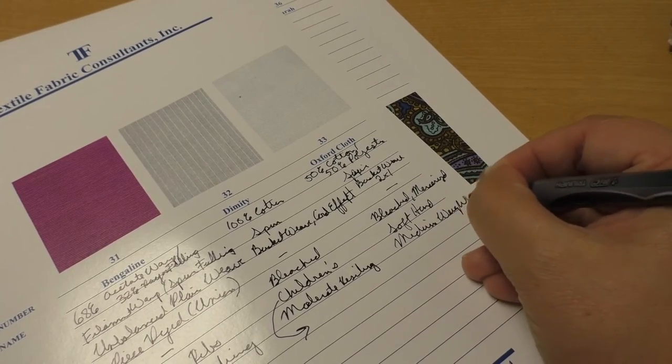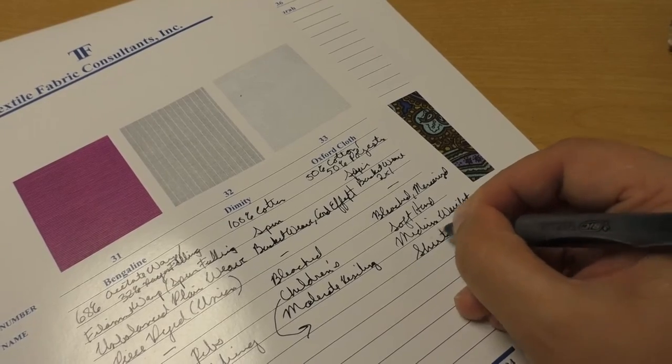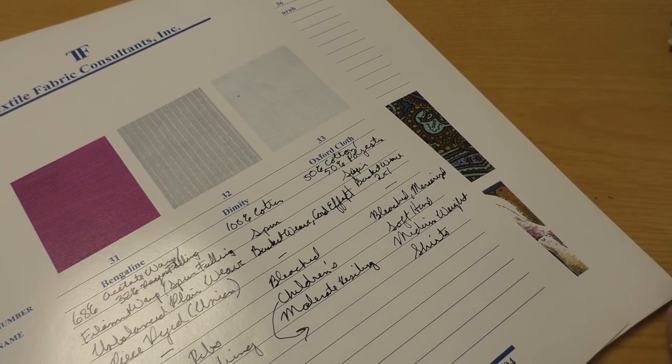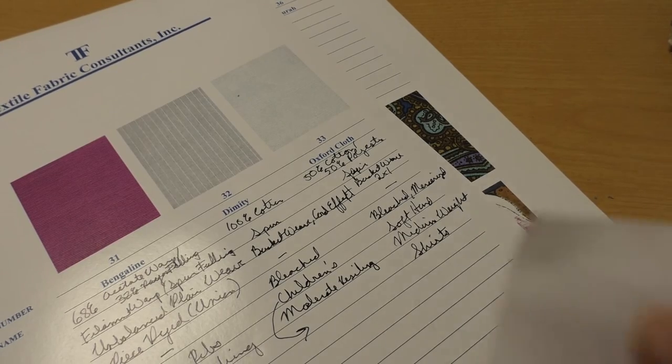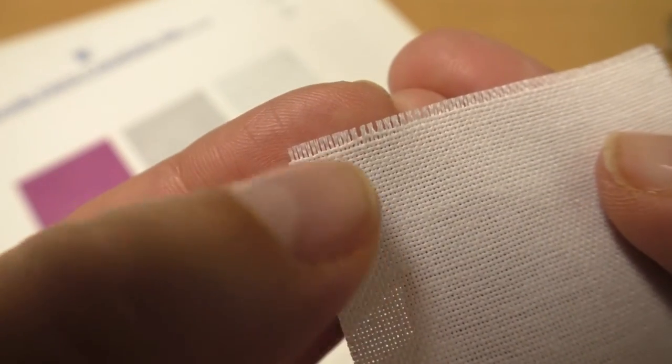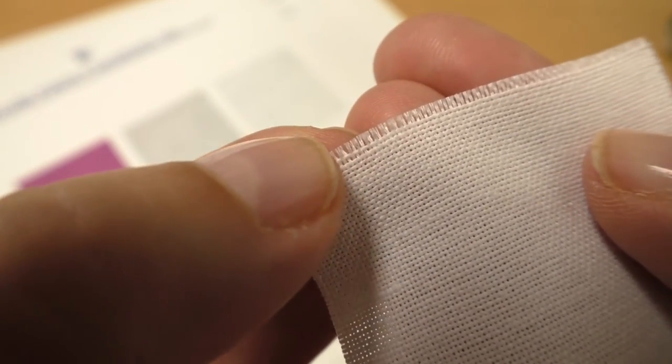Let's take a look at this oxford cloth. The basket weave means, can you see how those warp yarns are actually in little groups of two?